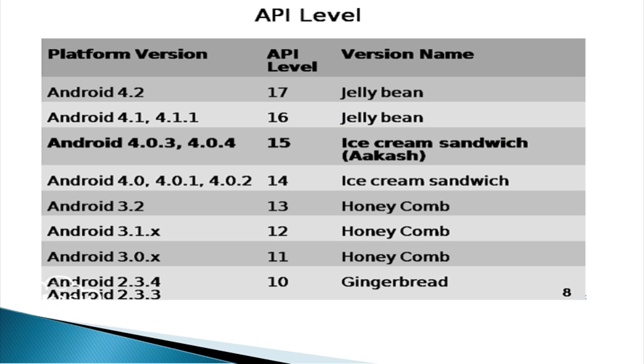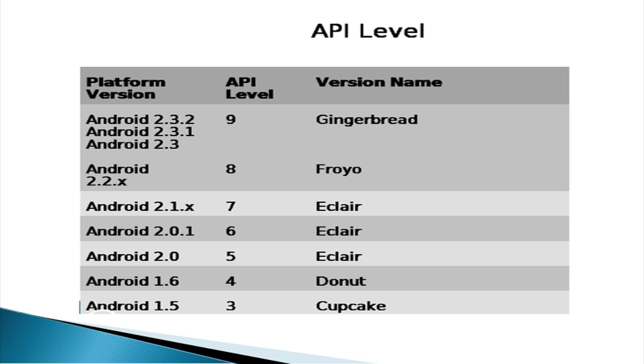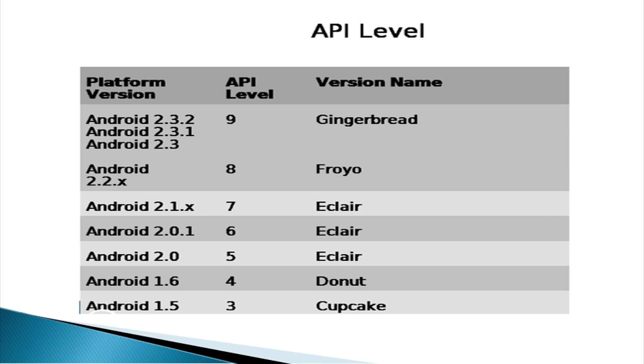If you try a class in the Eclipse editor and something comes as a strikethrough, like the notification manager class, that is a deprecated one — which means there is something better available. The API is an additive change; old would not be removed but yes it may be deprecated. For each version there is a corresponding API level. For our Akash tablet we are at version 4.0.3, API level 15, and the version name is Ice Cream Sandwich. I have mentioned all versions and corresponding API levels for your reference.